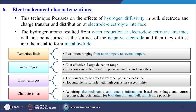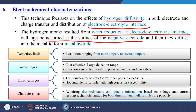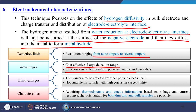The sixth technique is electrochemical characterization. This technique focuses on the effects of hydrogen diffusivity in bulk electrodes and charge transfer and distribution at the electrode-electrolyte interface. Hydrogen atoms resulting from water reduction at the electrode-electrolyte interface are first adsorbed at the surface of the negative electrode and then diffuse into the metal to form the metal hydride. Detection limit: resolution ranging from nanoampere to several amperes input current to the electrodes. Advantages: cost effective, large detection range, less concern about temperature, pressure control, and gas safety. Disadvantages: results may be affected by other parts in the electric cell; not suitable for samples with high corrosion susceptibility. Characterization for both thin film and bulk samples is possible.